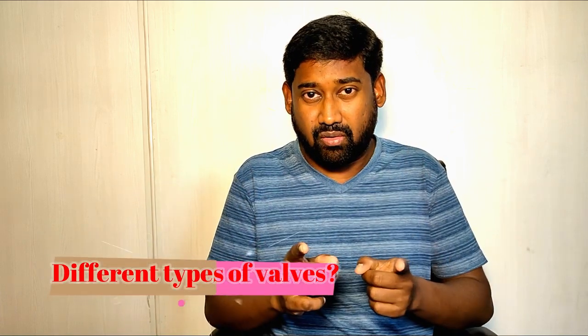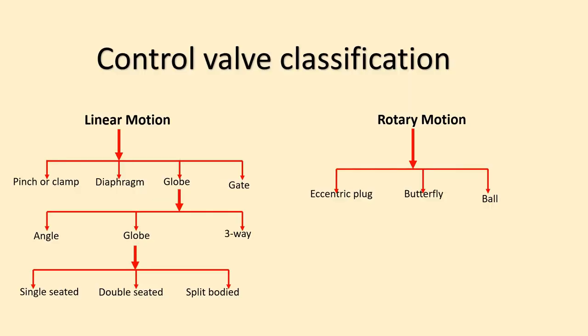In this video we are going to learn about different types of valves based on linear and rotary types. We have seen different types of control valves and their features in earlier videos. Now we are going to learn about different types of valve bodies with respect to linear and rotary motions using pictures and explanations. You can see here a control valve classifications chart.